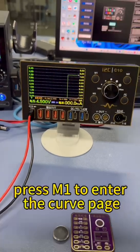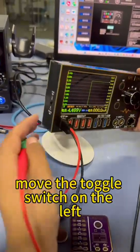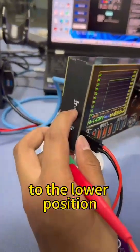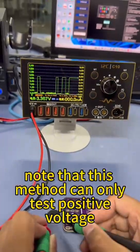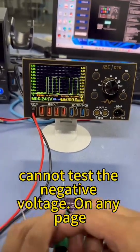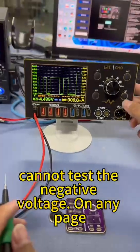Press M1 to enter the curve page. Move the toggle switch on the left to the lower position to measure the voltage. Note that this method can only test positive voltage, cannot test the negative voltage on any page.